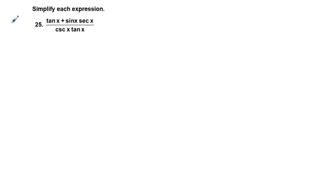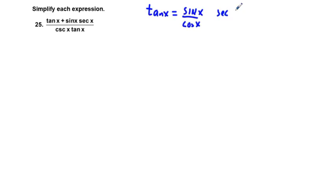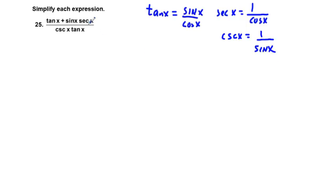Next problem, which is 25. We have tangent x plus sine x secant x over cosecant x tangent x. Again, it's going to be the same principle as the previous problem. Tangent x equals sine x over cosine x, secant x equals 1 over cosine x, and cosecant x equals 1 over sine x.